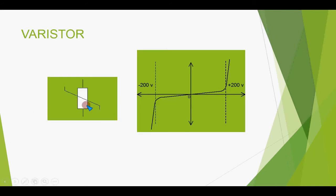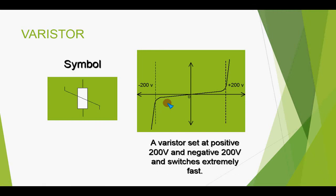This is the symbol of the varistor you can see. And here's the graph that shows the positive 200 volt and negative 200 volt. These are the preset limits for a varistor that will be used for voltage spikes to be removed.